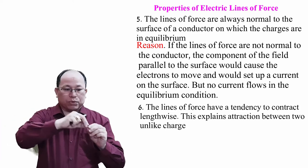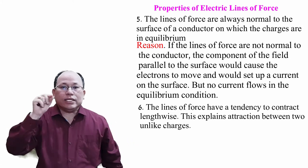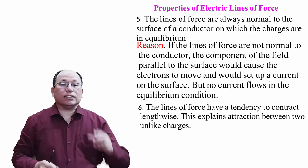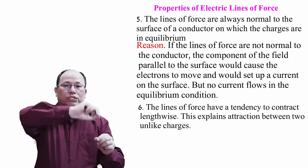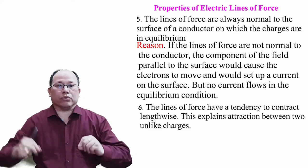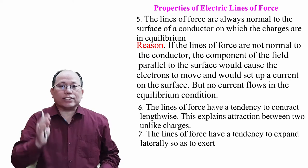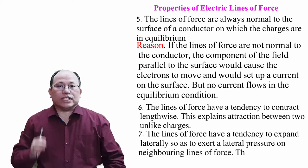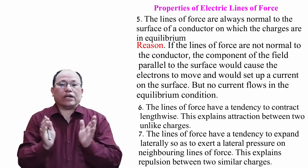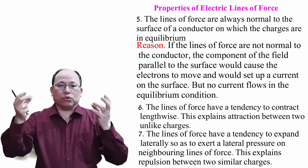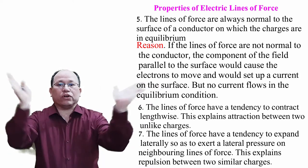The lines of force have a tendency to contract lengthwise — this explains attraction between two unlike charges. When a positive charge is near a negative charge, the field lines contract, resulting in attraction. The lines of force also have a tendency to expand laterally, exerting lateral pressure on neighboring lines of force — this explains repulsion between two similar (like) charges. Like charges cause field lines to expand laterally, resulting in repulsion.